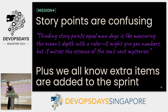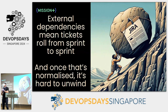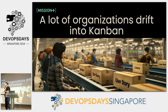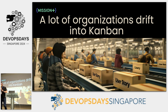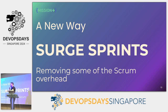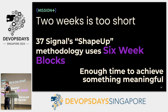Story points are confusing — you spend so much time educating new people that they're not actually hours but use a Fibonacci sequence, and then extra tickets get added anyway. There are a lot of external dependencies that get pushed from sprint to sprint, which kills your burndown charts, and if you've got rubbish burndown charts you start ignoring them completely. So what organizations do is drift into kanban, where they start ignoring ceremonies and no one really cares. Prioritization gets a bit easier, but isn't that missing the point?